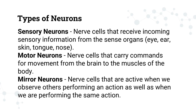Sensory neurons are also known as afferent neurons, while motor neurons are also known as efferent neurons. For you to easily remember — efferent starts with the letter E, same as the word 'exit,' so it goes from the brain to the parts of the body. Afferent, starting with letter A, goes from the parts of the body — from the muscles, from the organs — going to the brain.